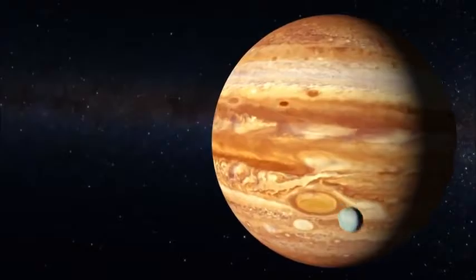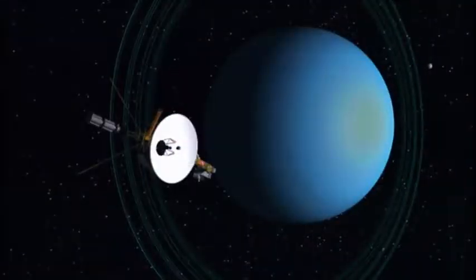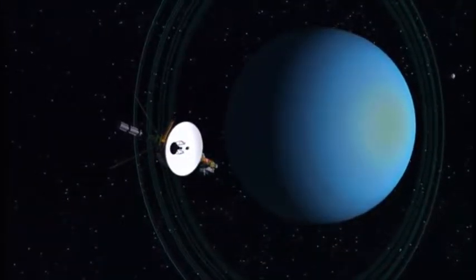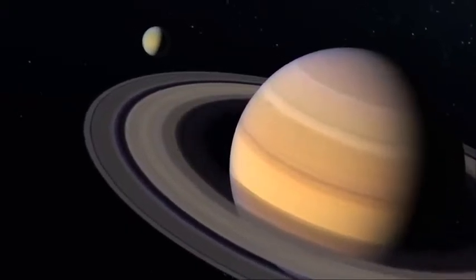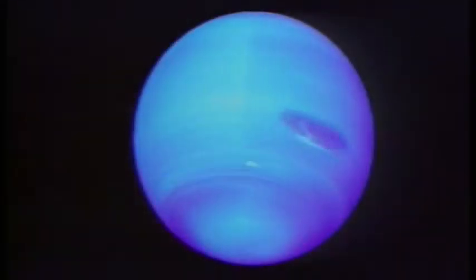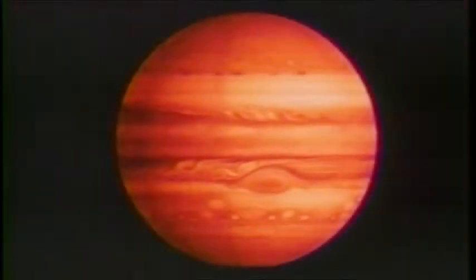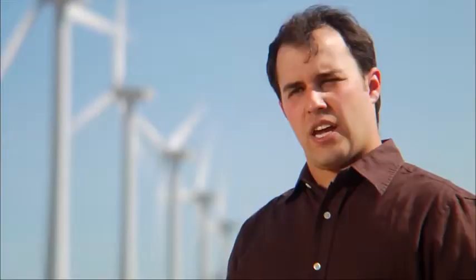While the other gas giants have wild weather patterns, Uranus seems to be relatively calm and scientists think they know why. Uranus is unique among the gas giant planets in that it is the only one that doesn't have an internal heating source. Jupiter, Saturn, and Neptune all have heat coming from deep within the planet and that helps drive the circulation. Uranus doesn't have this internal heating source.